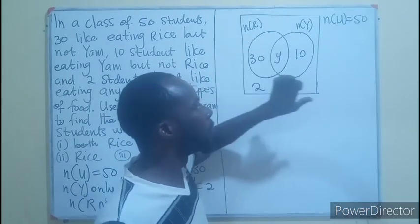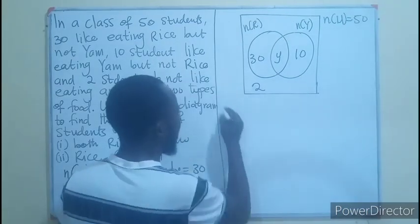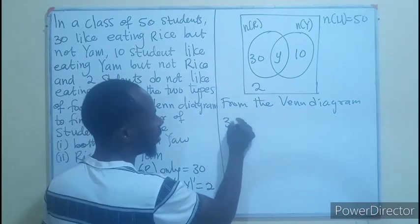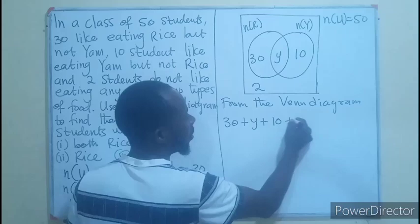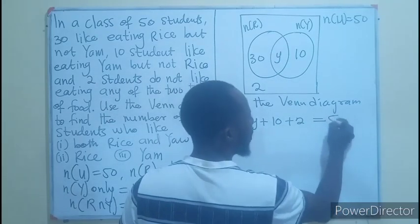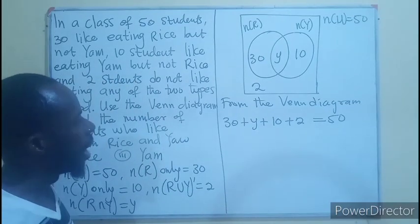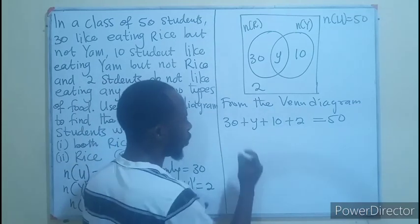And we are aware that in the Venn diagram, all the four regions sum up to give us 50. This will give us 40, 42.